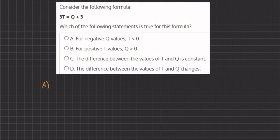Now if we plug in negative 1 for the value of q, q equals negative 1, let's see what happens. We have 3t equals negative 1 plus 3.